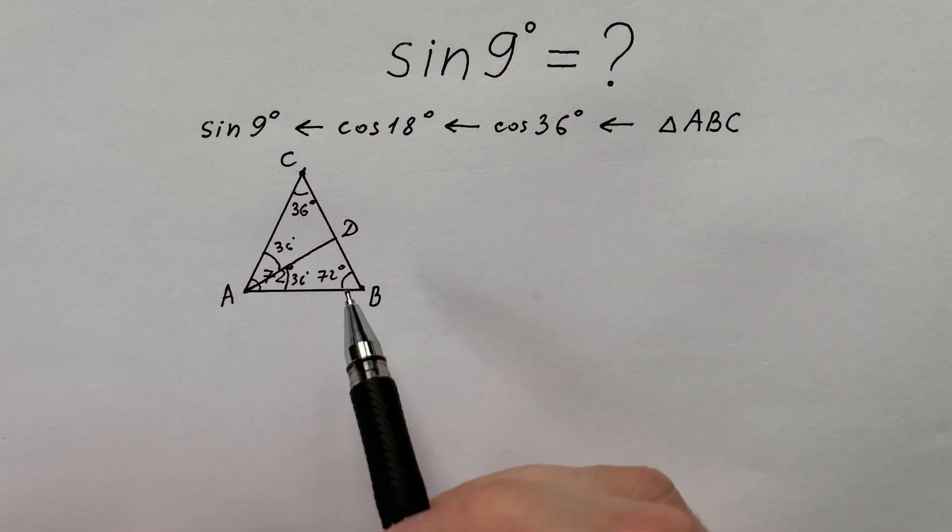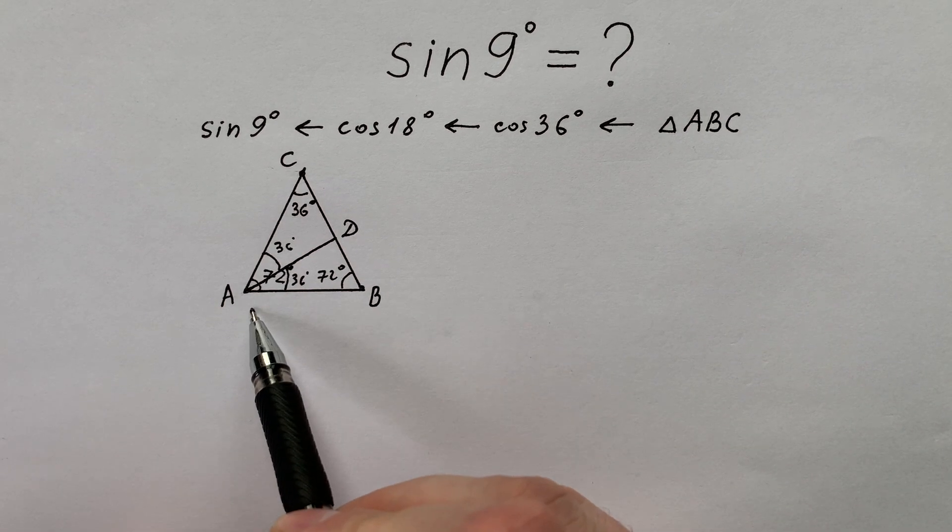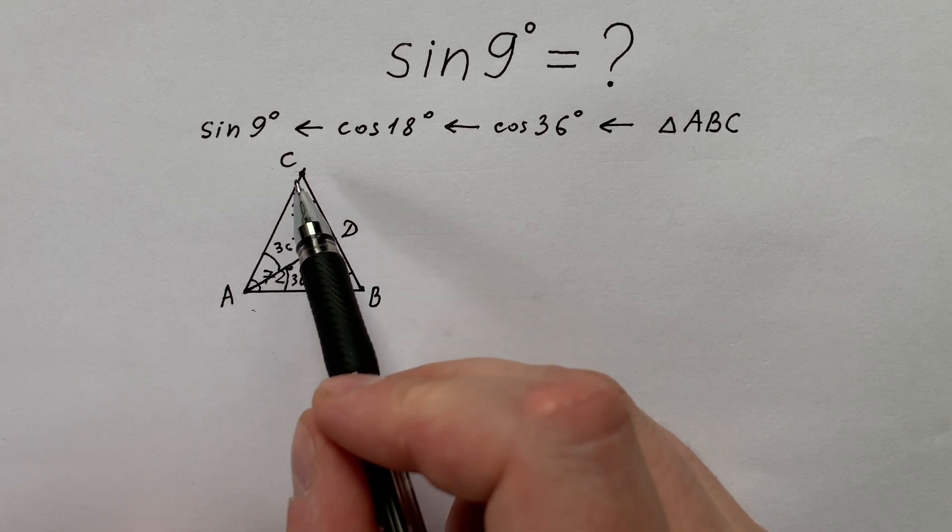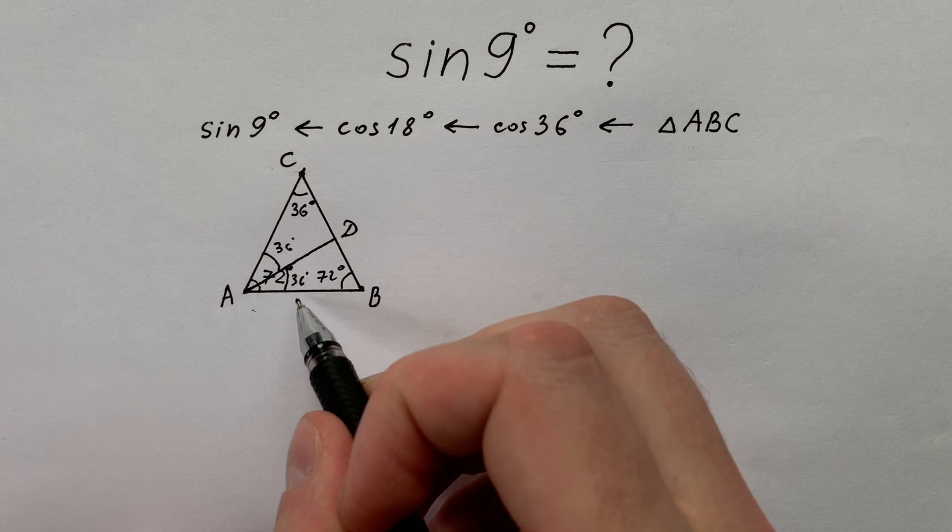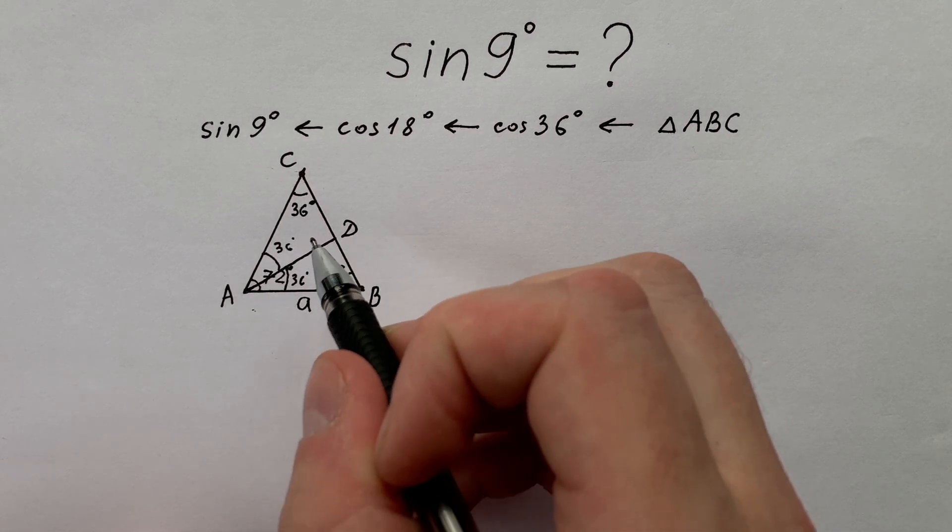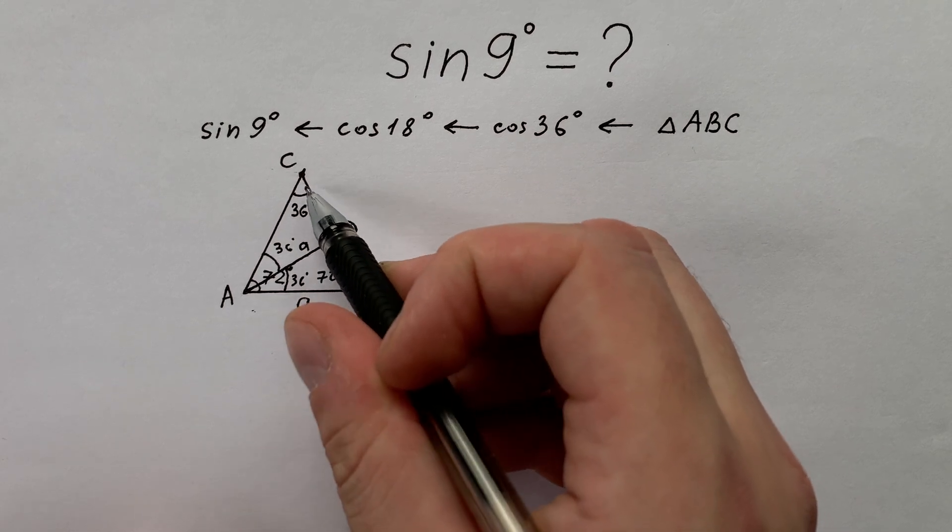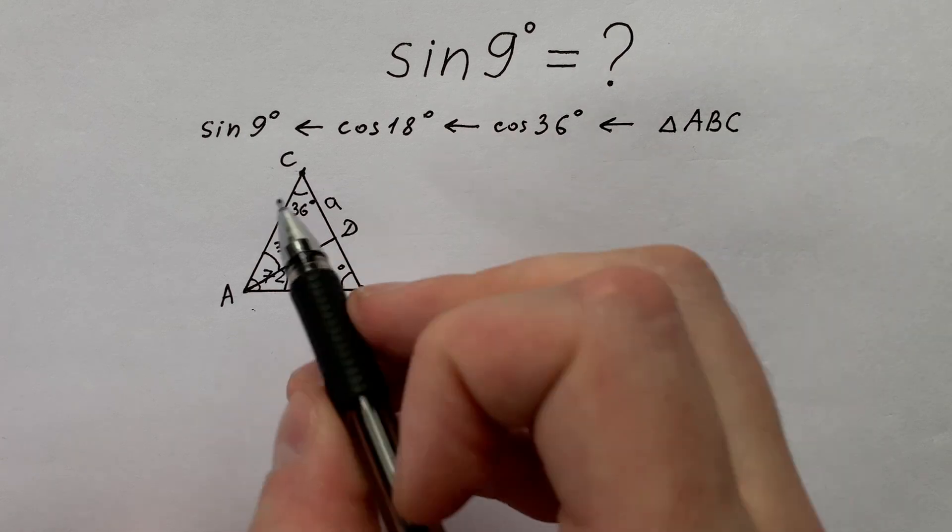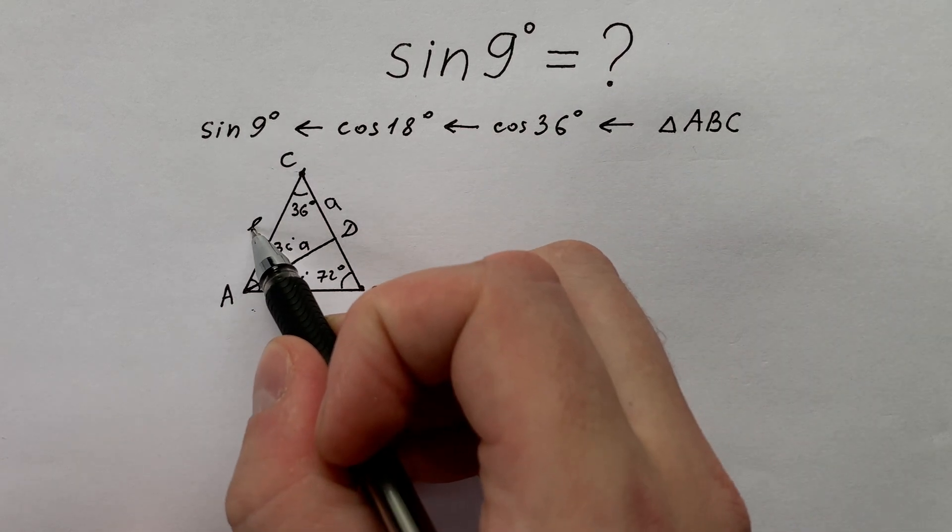And from this moment we have two isosceles triangles, ABD and ACD. Let's write AB equals to a. In this way AD is also equals to a. And CD is also equals to AD and it equals to a. And AC we can write like b.